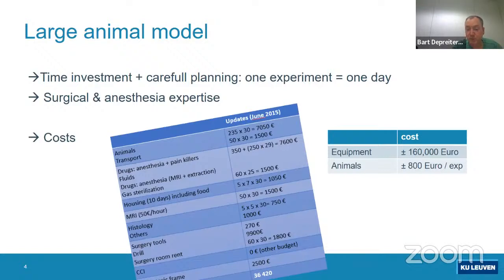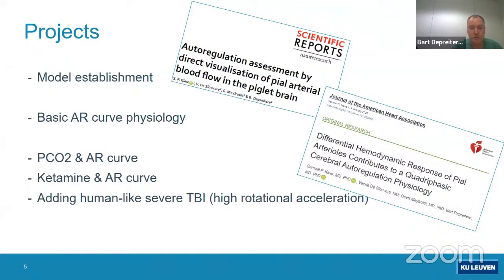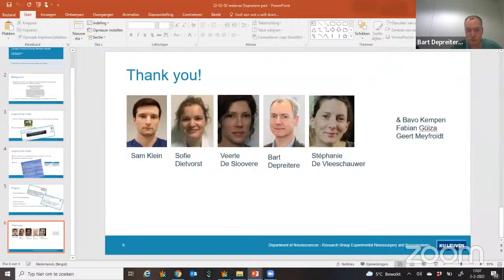We established the model, were happy with it, and produced a paper on basic autoregulation physiology — which won best abstract last year at the EANS. Sophie's current work is identifying the influence of pCO2 on the autoregulation curve; we also worked on ketamine's influence on the autoregulation curve. She is also adding a human-like severe TBI to the model, since for now it's a healthy model. Many people are involved in this kind of research, as other speakers will highlight. I'll now switch to Sophie.